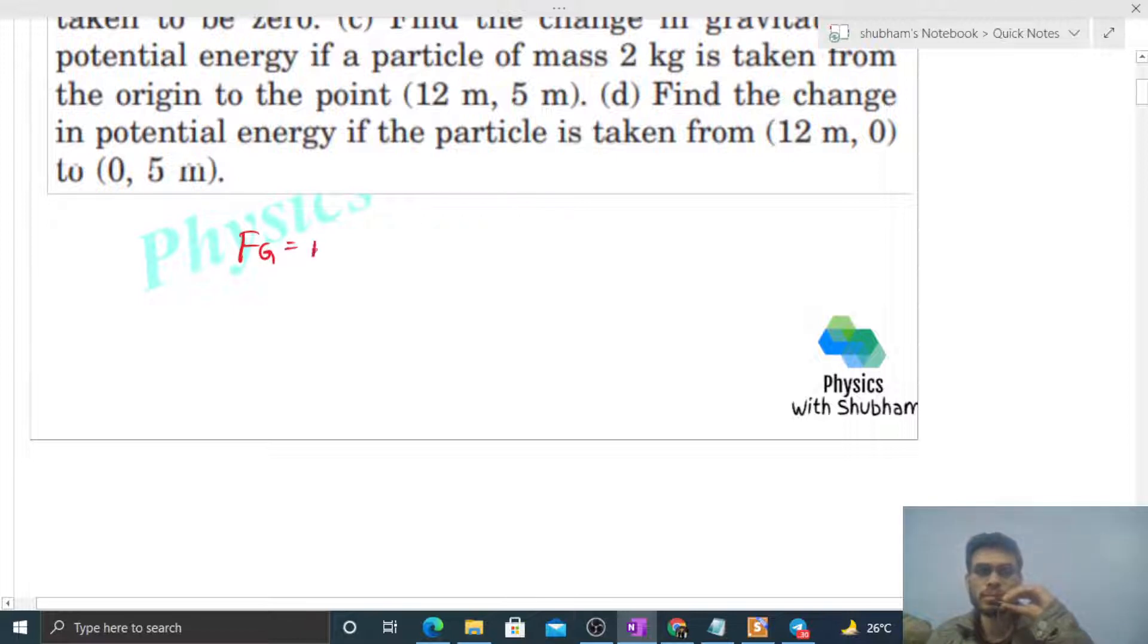Gravitational force is simply mass times field. Mass is 2 and field is 5i-cap + 12j-cap, so the force vector is 10i-cap + 24j-cap. To find the magnitude, take the square root of 10² + 24², which equals 26 Newtons.